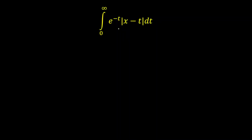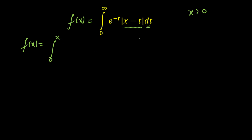Let's start. The first thing I observe is that this integral is a function of x, so let's say this is equal to f(x). Now I cannot integrate unless I break this absolute value. For this mod, we'll have two branches. Since x is a positive real number, I can take x as any value. Now, for the first branch, t varies from 0 to x, so mod of (x minus t) opens as (x minus t) because this number will be positive.